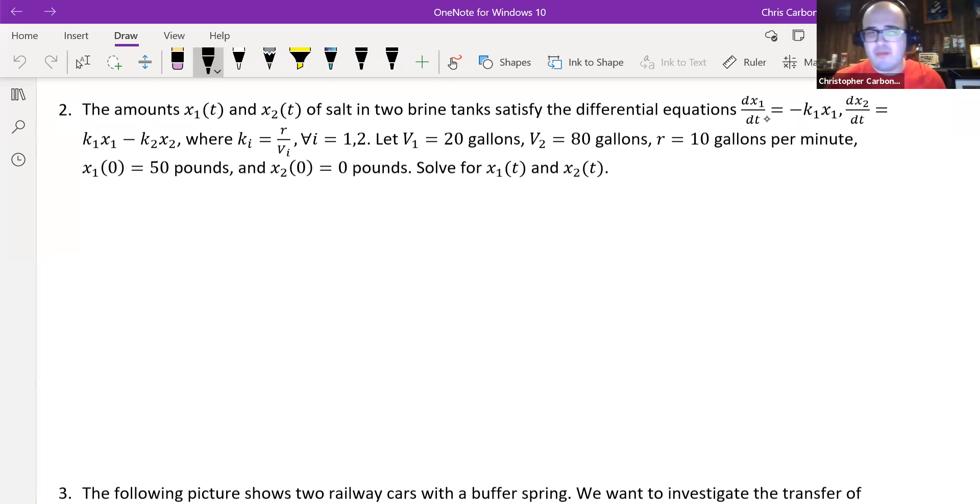So because of that, we should probably get our values of k first. So k₁, that would just be r divided by v₁. In our case, that's 10 divided by 20, or 1 half, or 0.5.